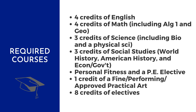Looking at these requirements in more detail, here are the specific 24 credits a student must earn: 4 credits of English, 4 credits of Math including Algebra I and Geometry, 3 credits of Science including Biology and a Physical Science, 3 credits of Social Studies including World History, American History, and Economics and Government. The PE requirement is a semester of Personal Fitness and a semester of a PE elective. They need at least one credit of an Art, and then 8 credits of electives.